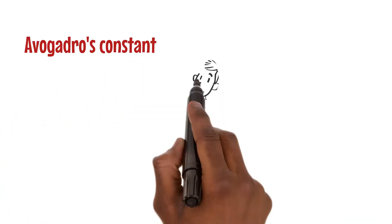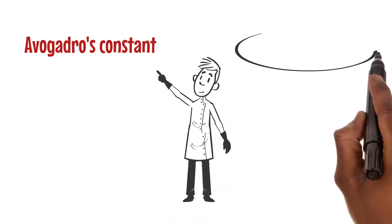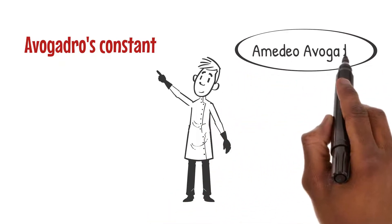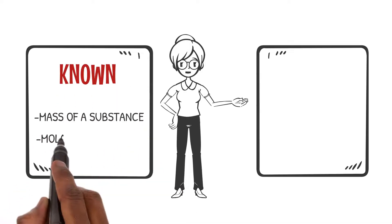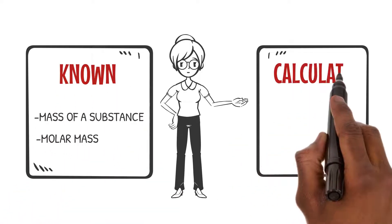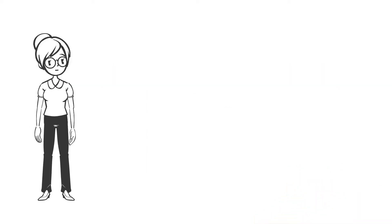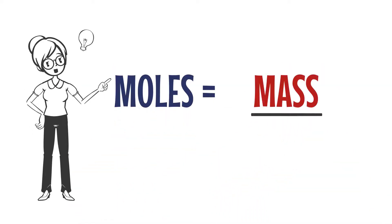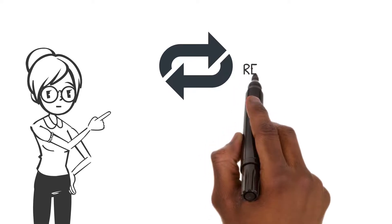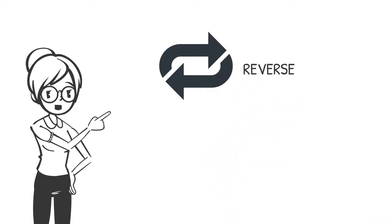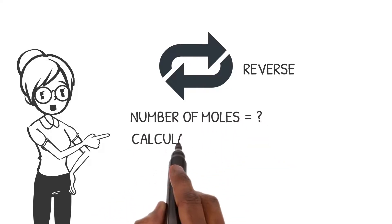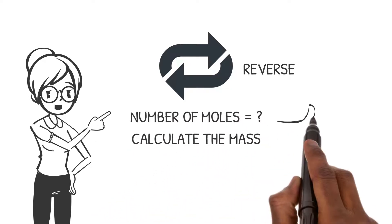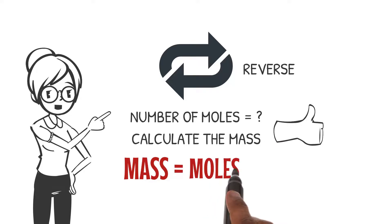If we know the mass of a substance and its molar mass, we can calculate the number of moles using a simple equation: moles = mass / molar mass. And the beauty of this equation is that we can go in the reverse direction too. If we know the number of moles, we can calculate the mass using another handy formula: mass = moles × molar mass.